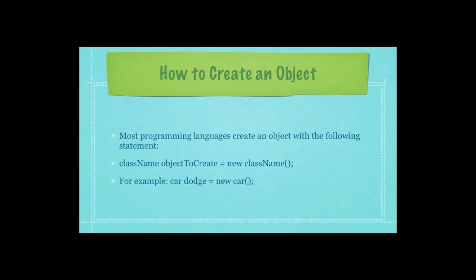So, how do you create an object specifically? Most programming languages create objects in much the same way as I have described here. They first list out the name of the class, followed by the name of the object you want to create, followed by the equal sign, the keyword new, then the class name, followed by two brackets and a semicolon. Or, a more specific example, let's say we wanted to create an object named dodge of type car class. You would just simply follow the example I have here on the screen.